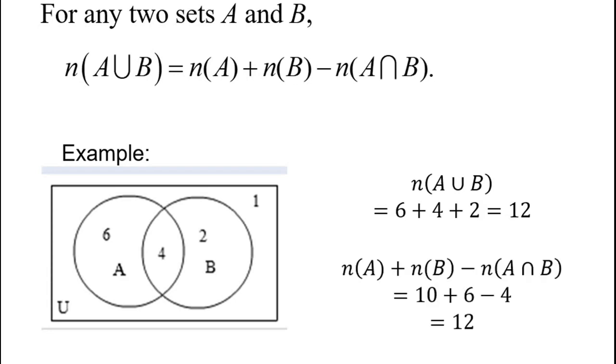Now let's look at the right side. So on the right side, we take the number in A, which is 10, because 6 and 4, and we add to it the number in B, which is 6, because of 4 and 2. And then we subtract from it 4.